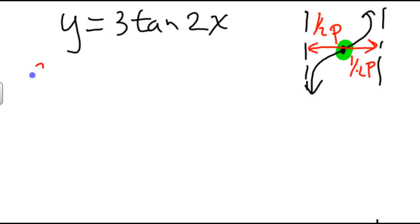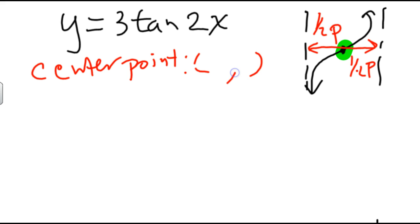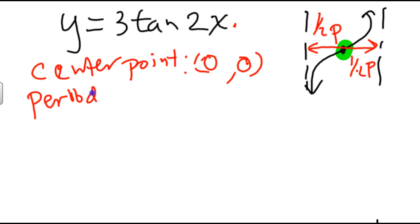The center point is always the value h, k — the values added or subtracted from x inside the parentheses and outside. Since there are no parentheses, h must be 0, and since nothing is added or subtracted at the end, k must be 0. So my center point is 0, 0. The normal period for tangent is pi. I divide by the b value, which is 2, so my period for this graph is pi over 2.